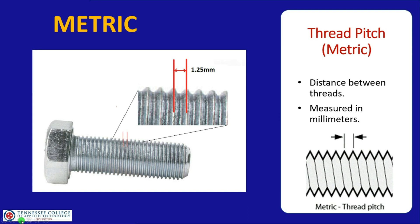Thread pitch on a metric bolt is a little different. Where standard uses threads per inch, metric uses the distance between each thread. Looking at a blown-up image, the distance from the top of one thread to the top of the next is 1.25 — meaning the thread pitch is 1.25 millimeters between each thread.